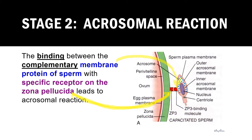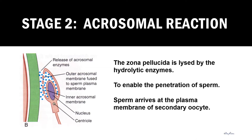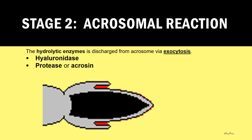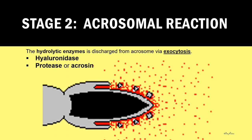After the binding between the complementary proteins of the two gametes, the membrane of the acrosome will fuse with the membrane of the sperm head and release the hydrolytic enzyme through exocytosis. The hydrolytic enzyme is able to hydrolyze or break down the zona pellucida and enable the penetration of the sperm to reach the membrane of the secondary oocyte. The hydrolytic enzymes found in the acrosome consist of hyaluronidase and protease, also called acrosin. This picture shows how the acrosome membrane fuses with the membrane of the sperm head and releases the enzymes through exocytosis.